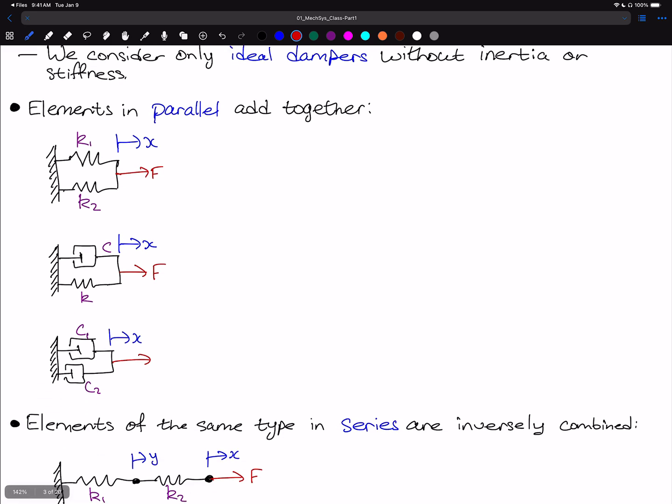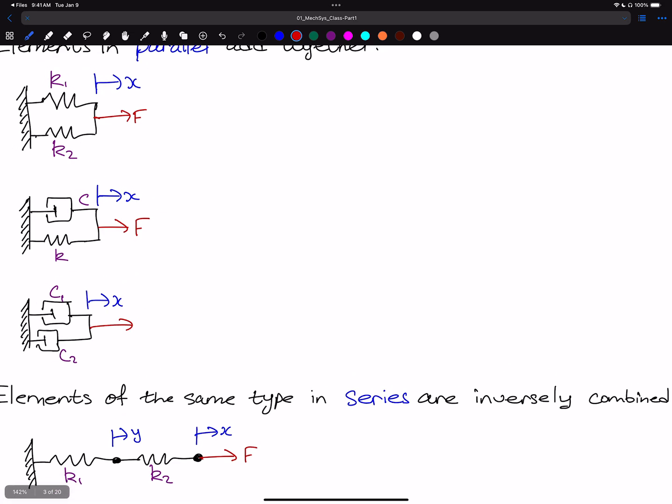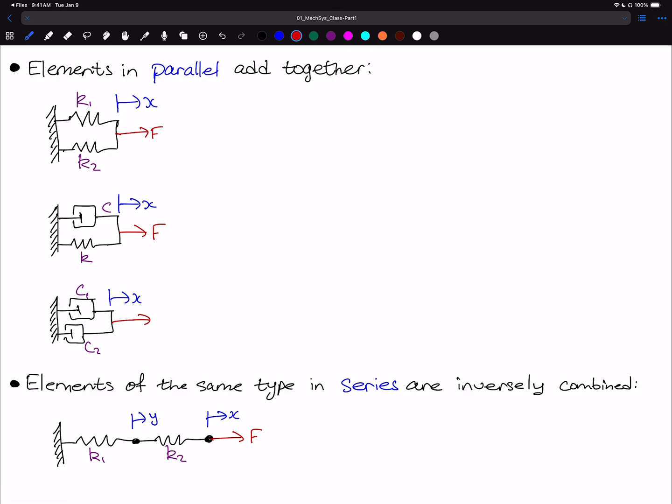Now we're going to consider how elements in parallel add together. As shown here, we have two springs in parallel. At the bottom of the screen, you see what series looks like, one after the other. When you have two springs in parallel, they just add together directly. So the force is equal to K1 times X plus K2 times X, or quite simply, the force equals the quantity K1 plus K2 times X, such that the equivalent stiffness K_eq is equal to K1 plus K2.